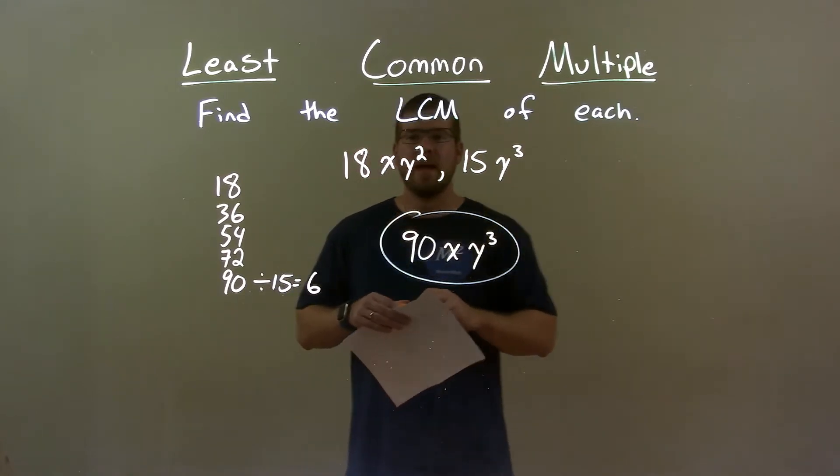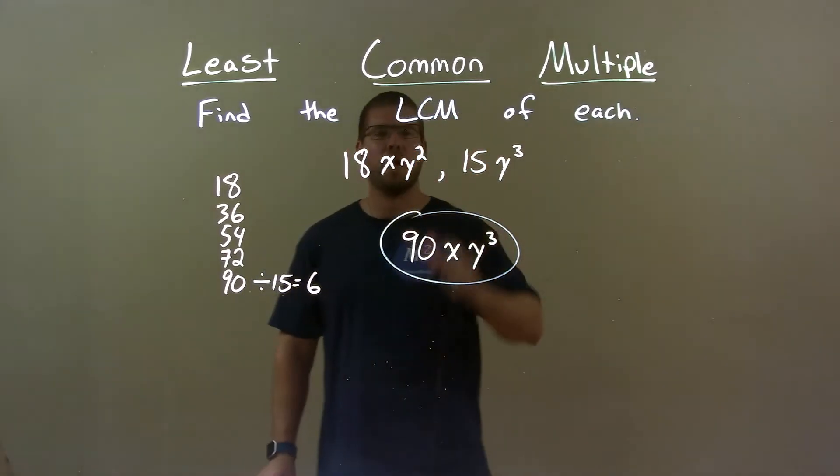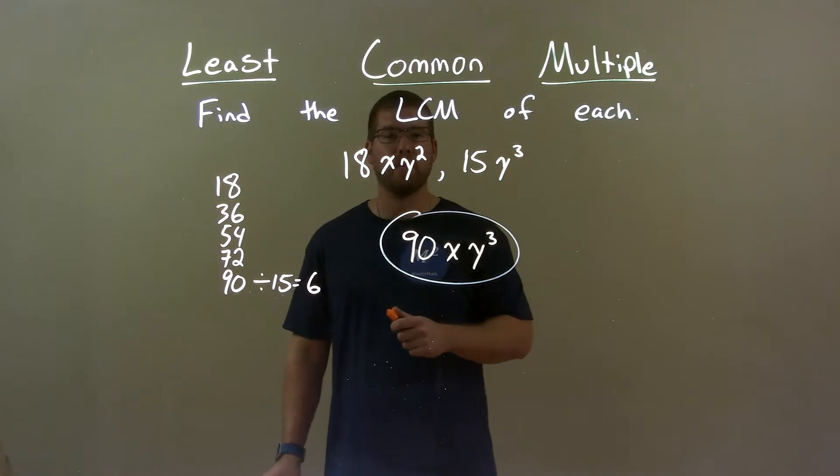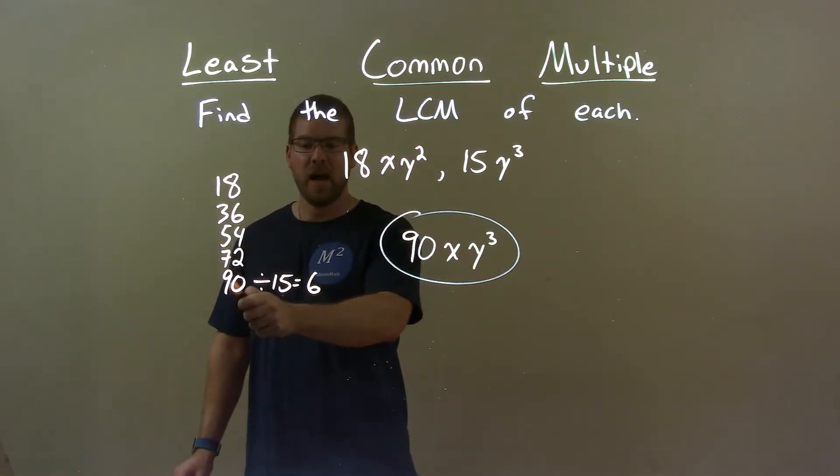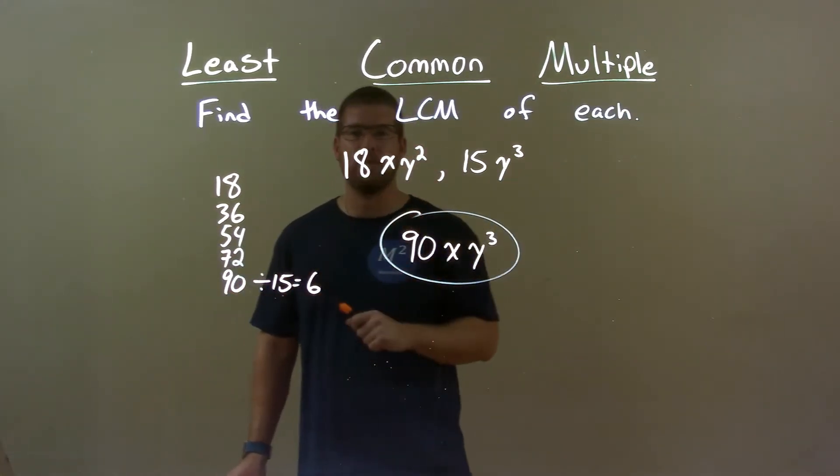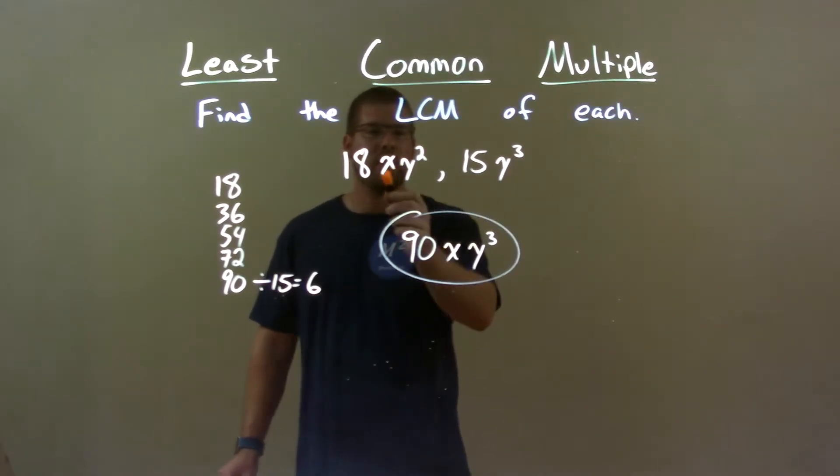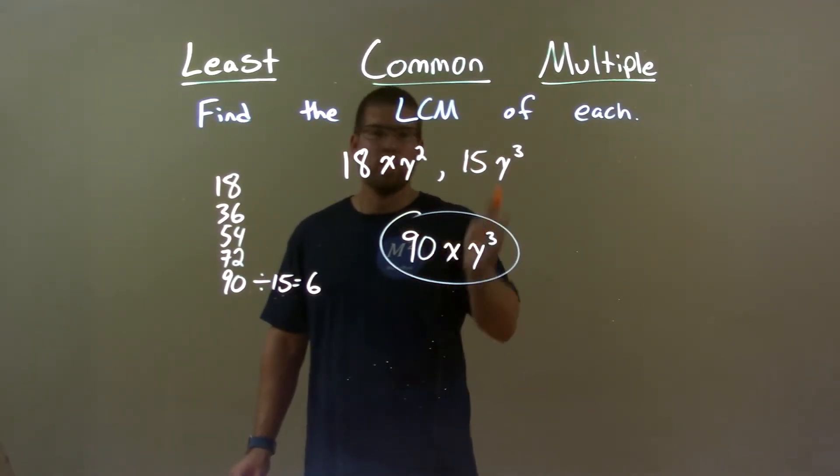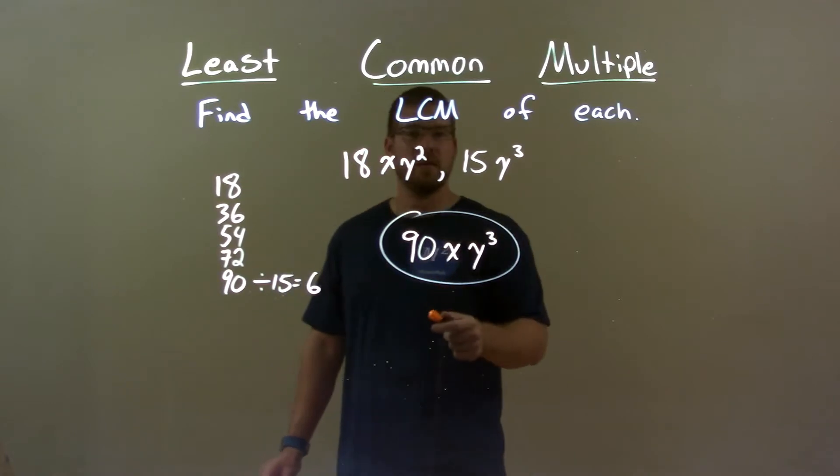Quick recap. We're given 18xy² and 15y³, and the final least common multiple - I went through the multiples of 18 and found that 90 was the first one divisible by 15. Make sure we encompass all of our variables, so our final answer is 90xy³.